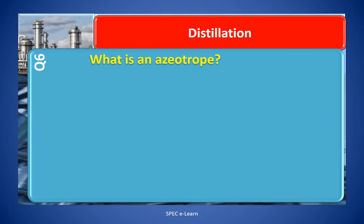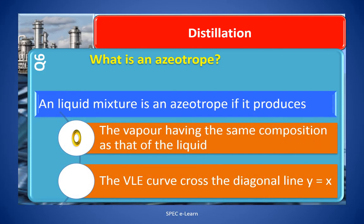Question number 6: What is an azeotrope? An azeotrope is a liquid mixture that produces a vapor having the same composition as that of the liquid. The VLE curve crosses the diagonal line Y equals X.